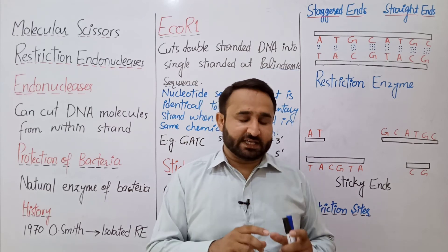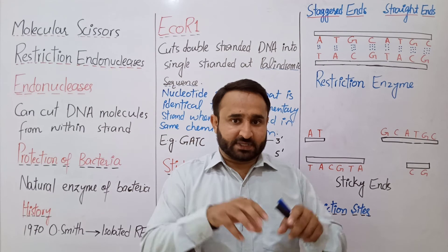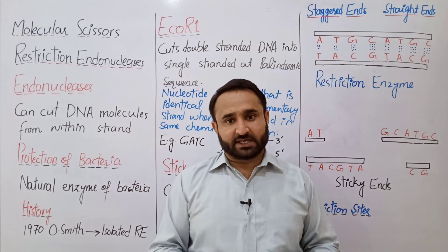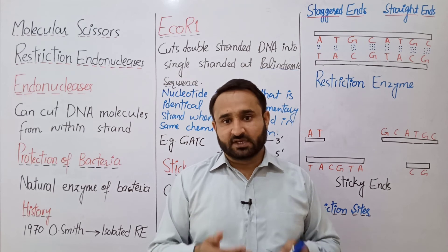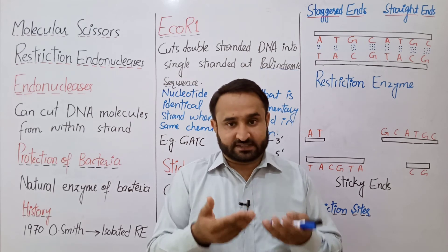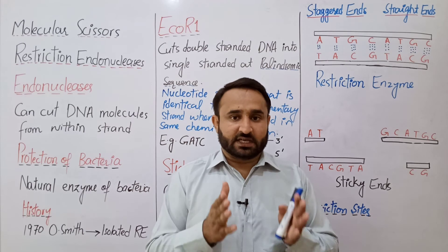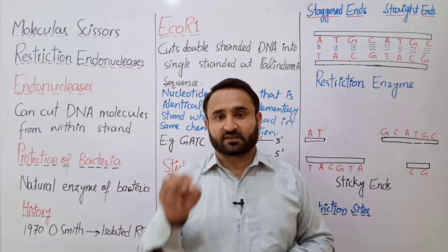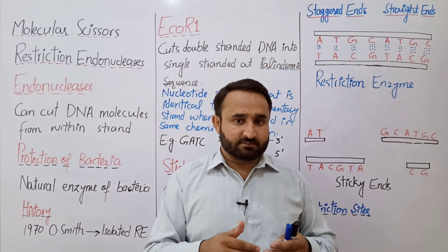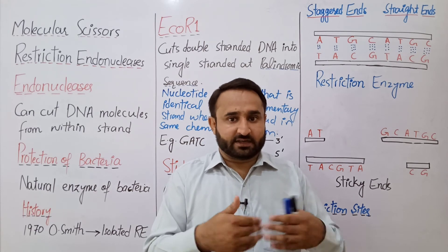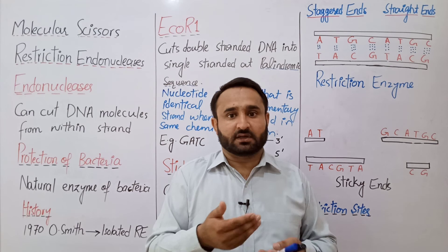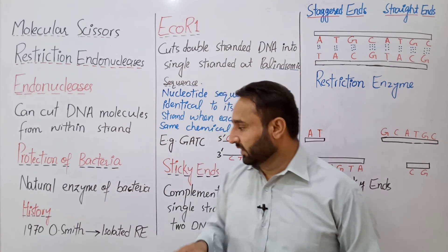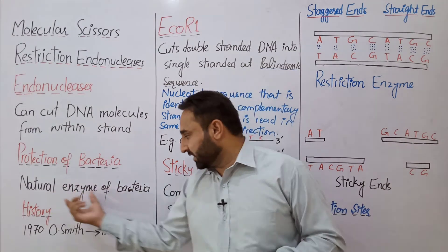The function of these naturally synthesized enzymes is that when any phage virus or bacteriophage attacks, we know that a virus injects its DNA into its host. These enzymes cut and break that viral DNA from specific sequences — specific restriction sites, called palindromic sequences. That is why they are called restriction enzymes, because they restrict the proliferation and increase in the number of DNA copies of the viruses.